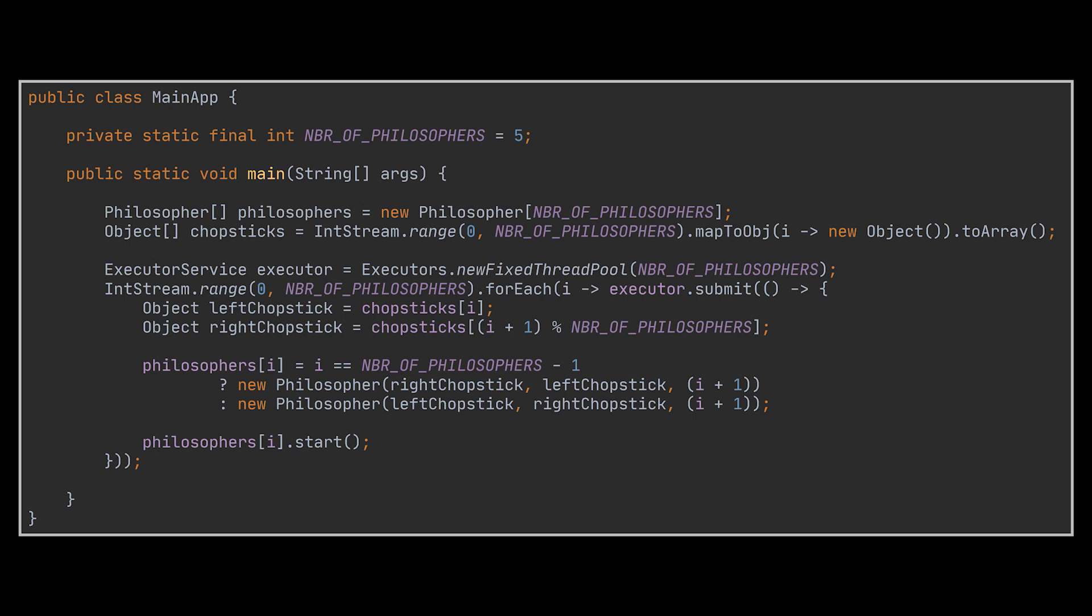As we previously discussed, the primary reason for a deadlock is the circular wait condition, where each process waits on a resource that's being held by some other process. To avoid that deadlock situation, we need to make sure that the circular wait condition is broken. There are several ways to achieve this.